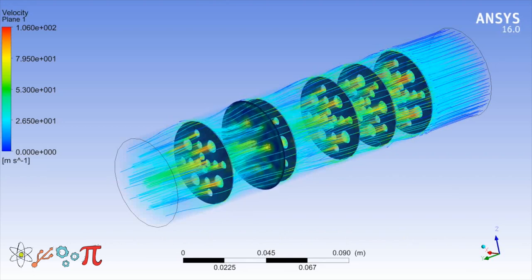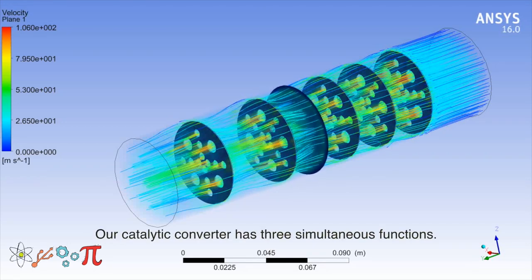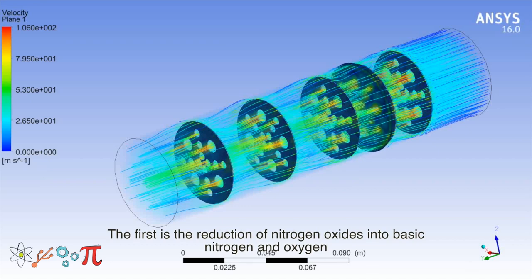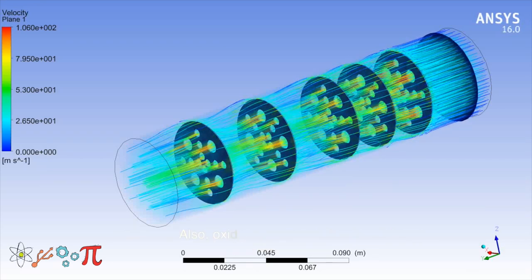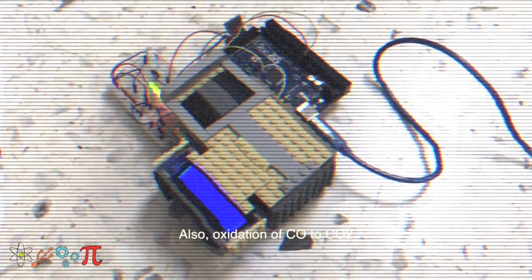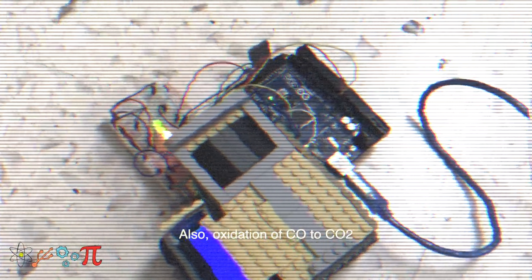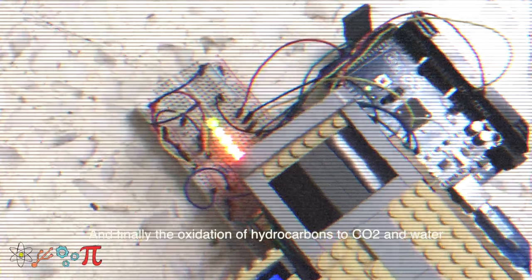Our catalytic converter has three simultaneous functions. The first one is the reduction of nitrogen oxides into elemental nitrogen and oxygen. Also, the oxidation of carbon monoxide to carbon dioxide. And finally, the oxidation of hydrocarbons into carbon dioxide and water.